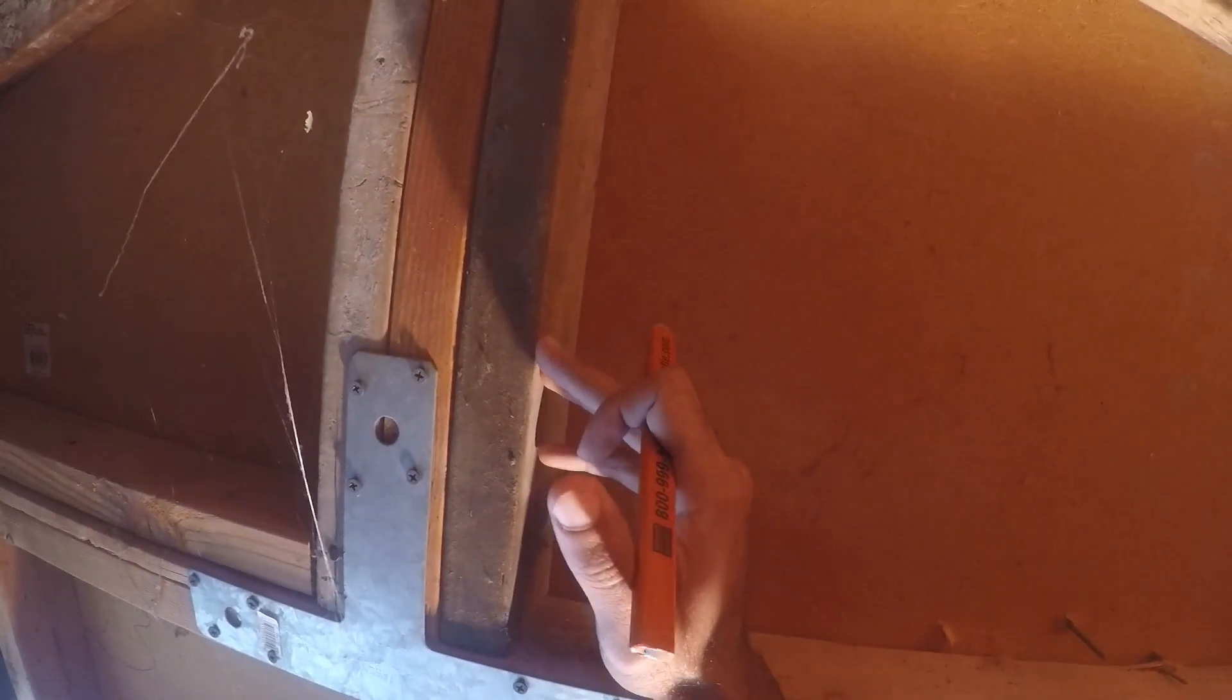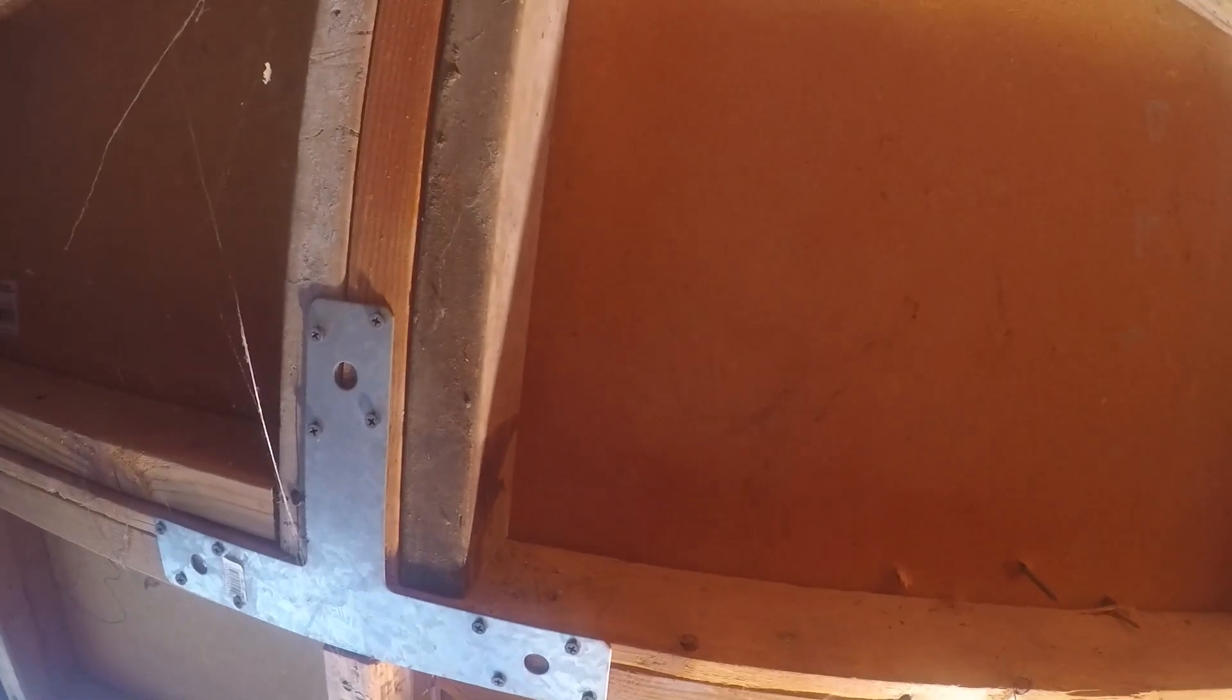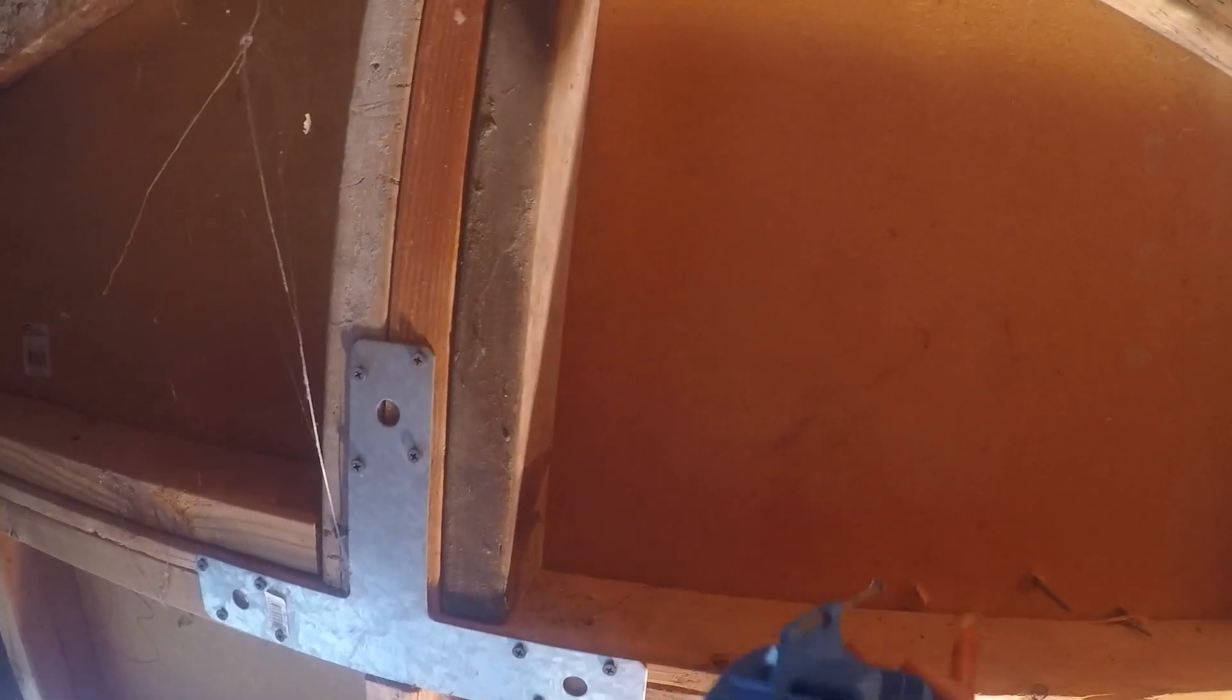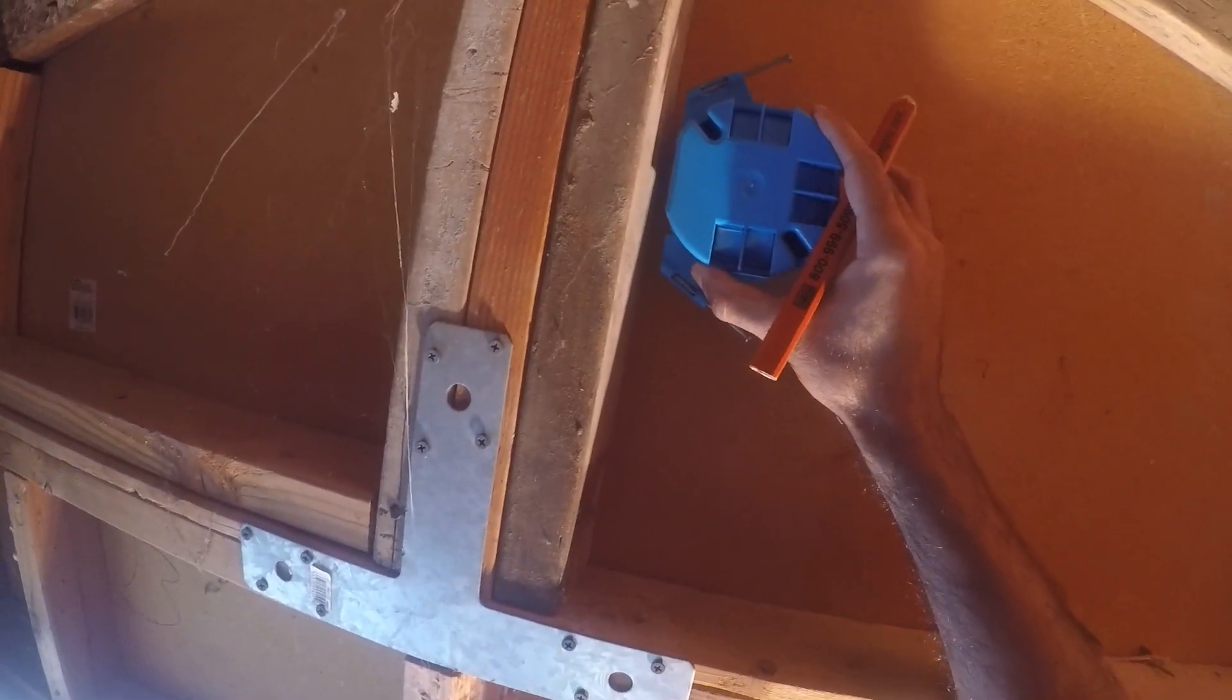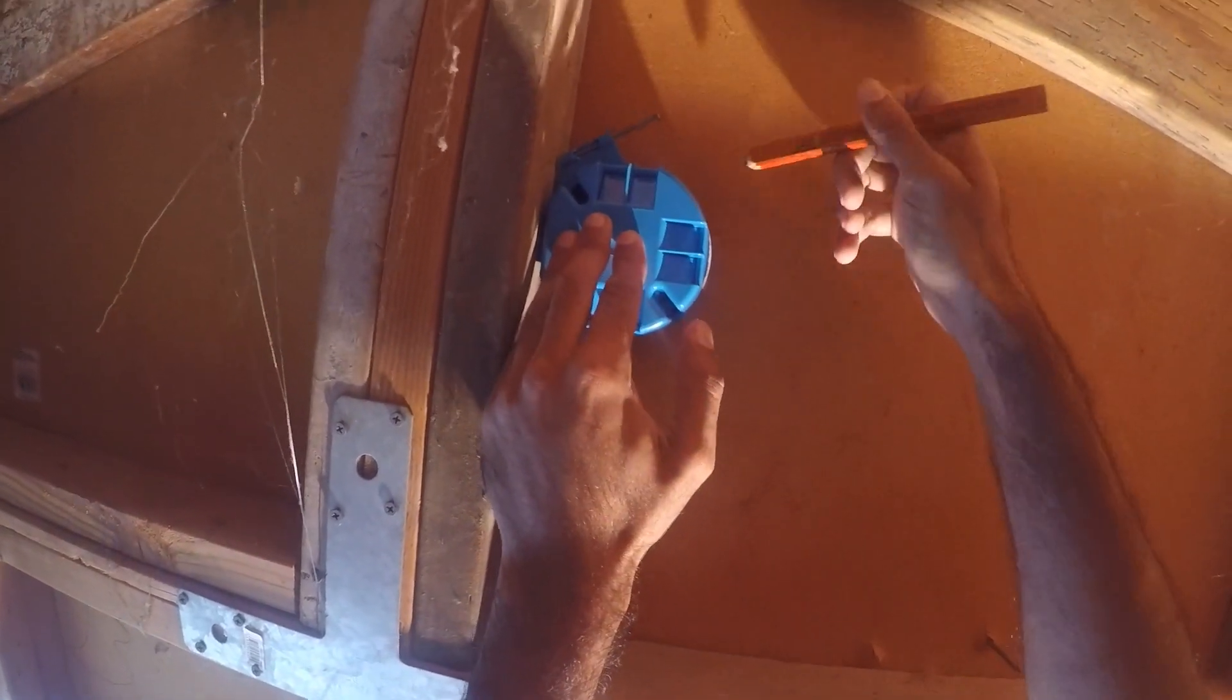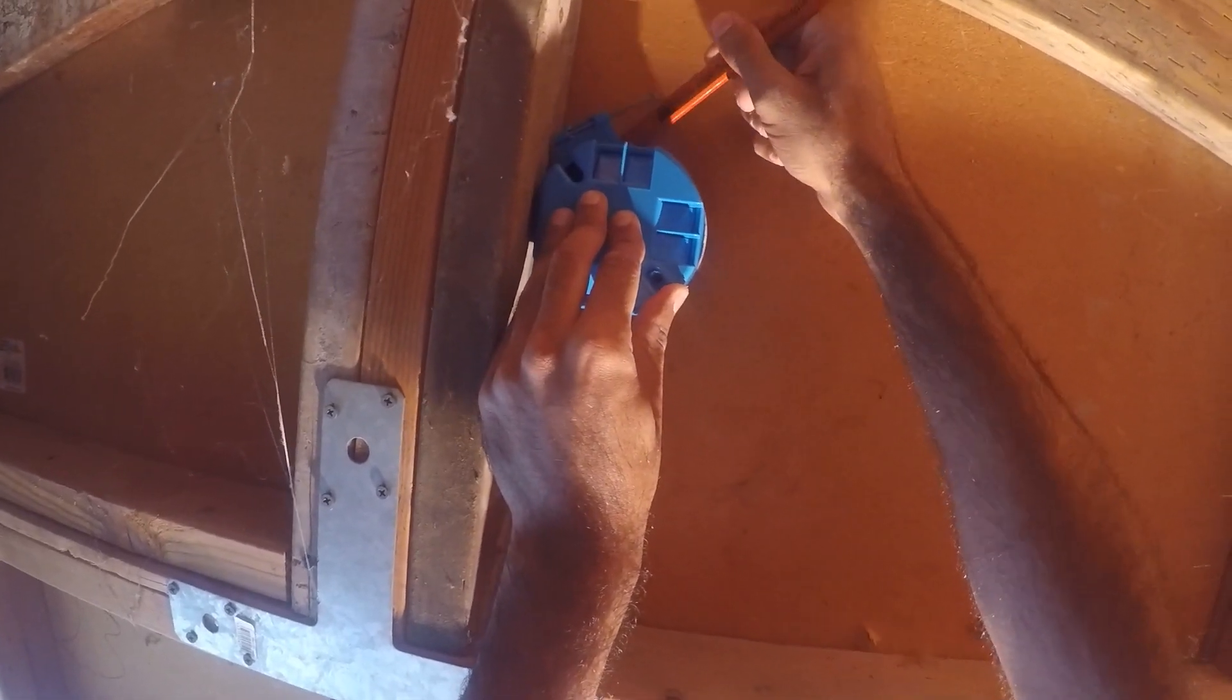Since we have the advantage of being able to see the studs, we don't have to use a stud finder. Otherwise, if you were doing it from the other side of the wall, you'd have to use a stud finder to find the edge and put this box at the edge. So essentially we're going to put the box near the edge and mark the outside of the box.